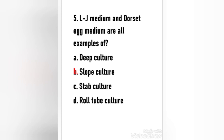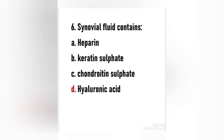Next question: LJ medium and Dorset egg medium are all examples of — (a) deep culture, (b) slope culture, (c) stab culture, (d) roll tube culture. The right answer is option B — slope culture. Growing cultures of bacteria on solid media permits us to view and identify colony characteristics and also provides a way to separate bacteria in a mixed culture.